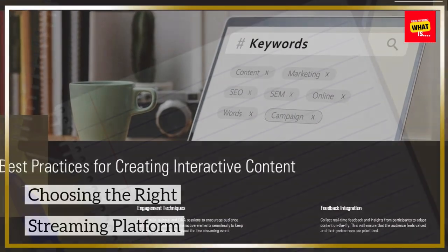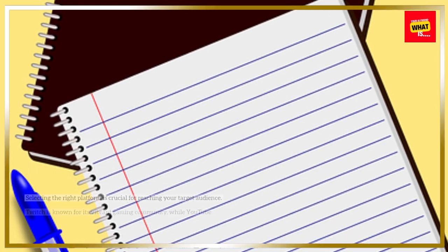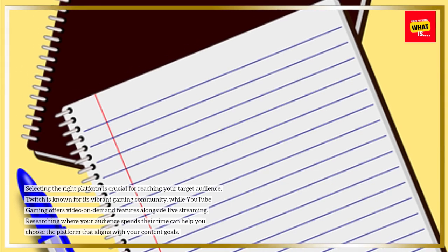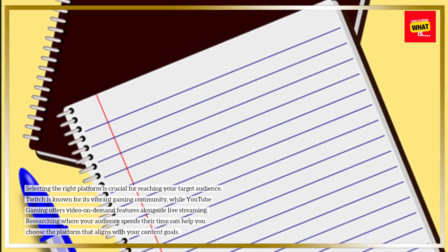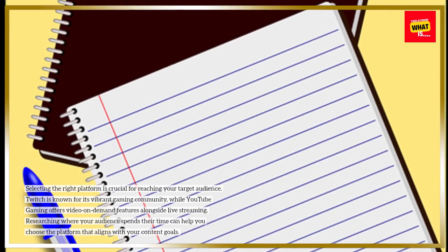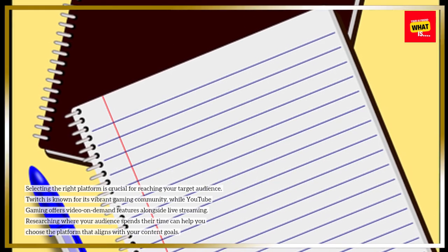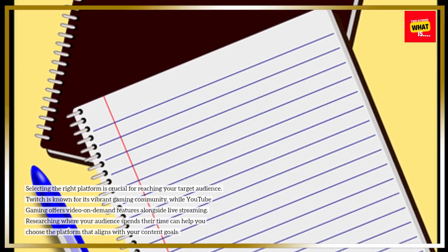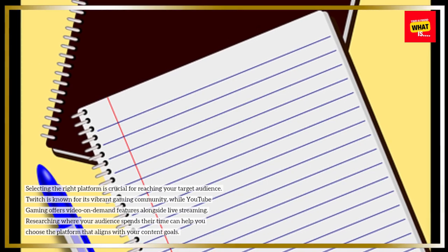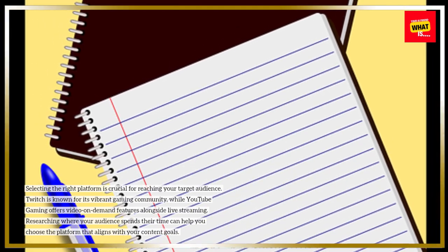Choosing the right streaming platform. Selecting the right platform is crucial for reaching your target audience. Twitch is known for its vibrant gaming community, while YouTube Gaming offers video-on-demand features alongside live streaming. Researching where your audience spends their time can help you choose the platform that aligns with your content goals.